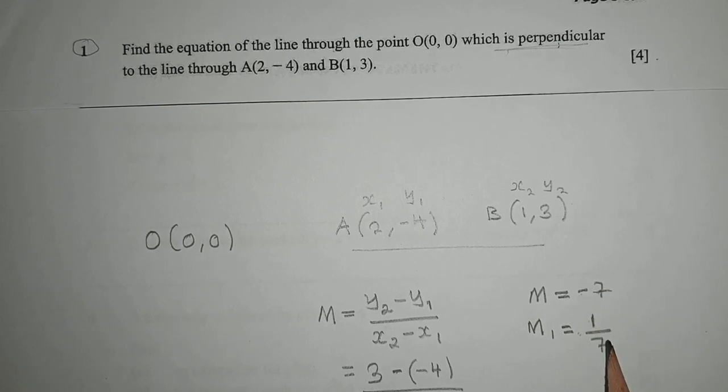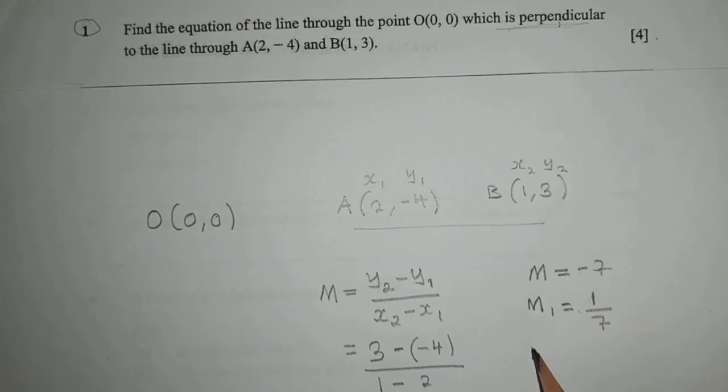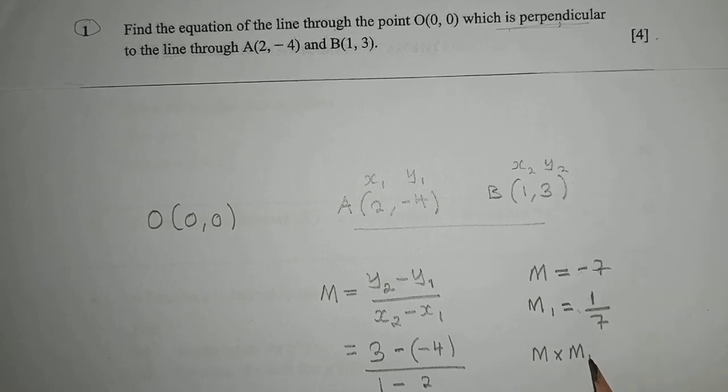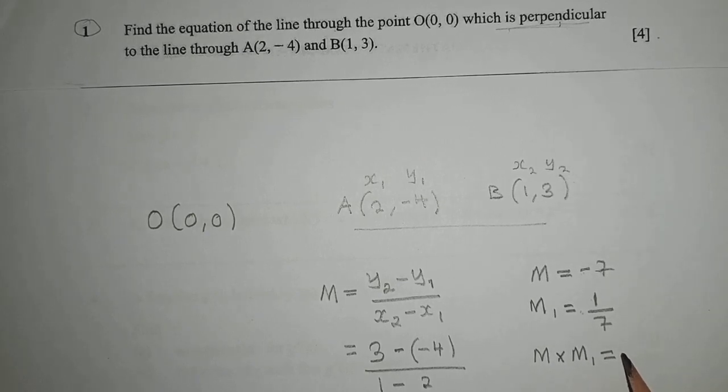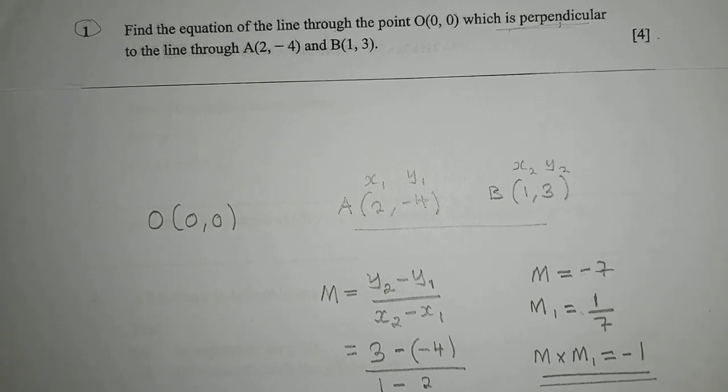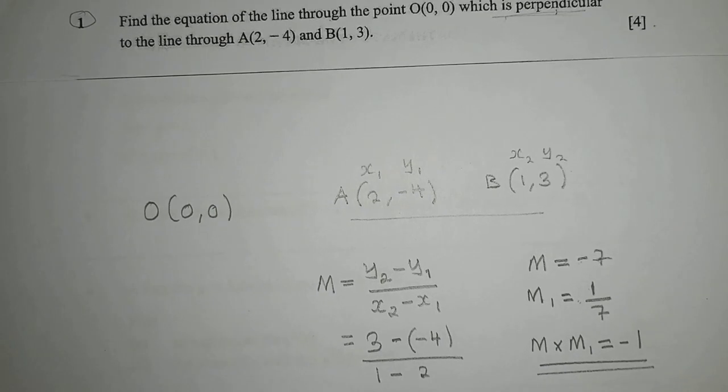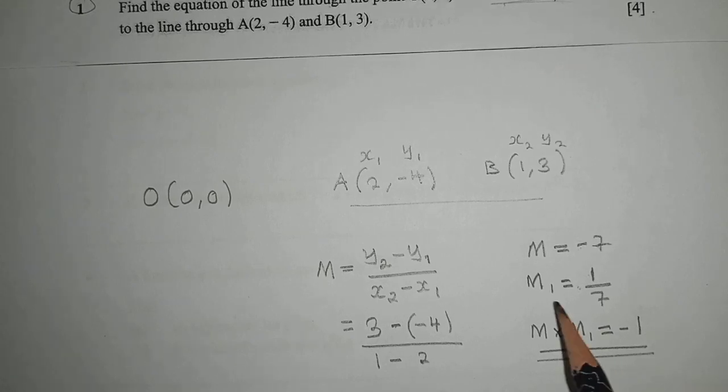If you want to prove this, you can multiply: m times m1 must give you -1. If it gives you -1, then you are good to go. This is our new gradient that we're going to use.